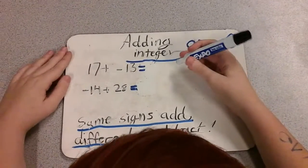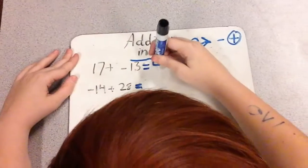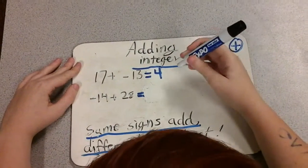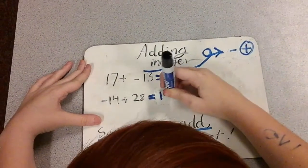17 plus negative 13 is positive 4. Negative 14 plus 28 is positive 14.